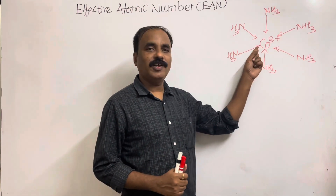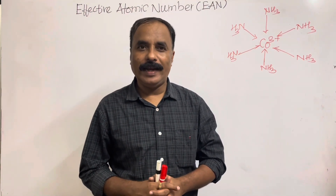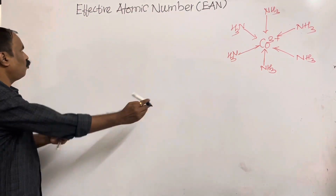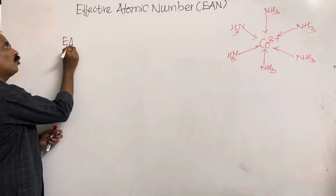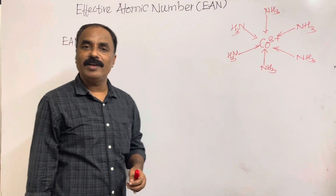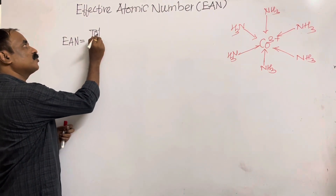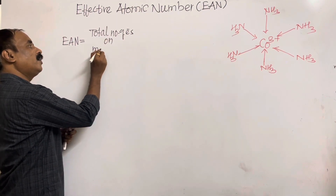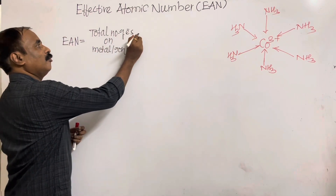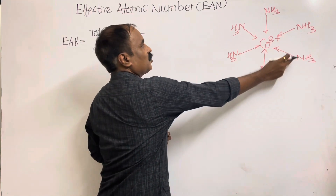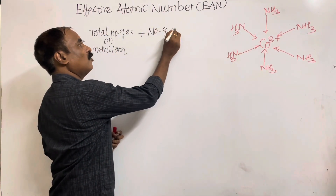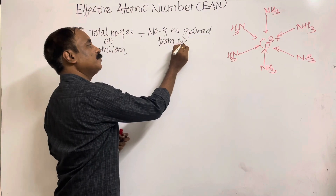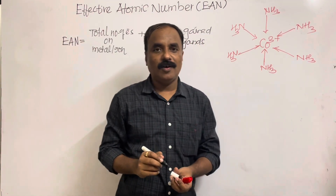To calculate the Effective Atomic Number of the metal, watch this video till the end. The formula for Sidgwick's Effective Atomic Number is: EAN equals total number of electrons on the metal or metal ion, plus the number of electrons gained from ligands.